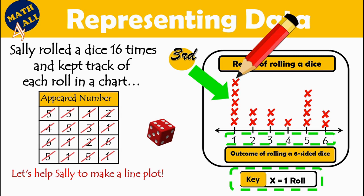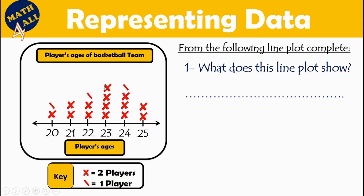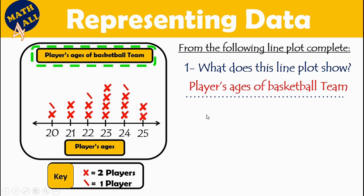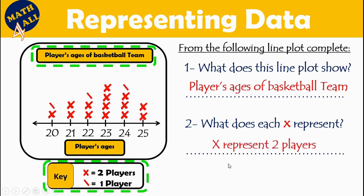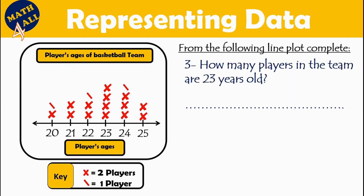Now let's go to the next example. We have a line plot with questions. First: what does this line plot show? We look at the title — 'Players Ages of Basketball Team' — that is the answer. Second: what does each X represent? To find the value of X we go to the key.